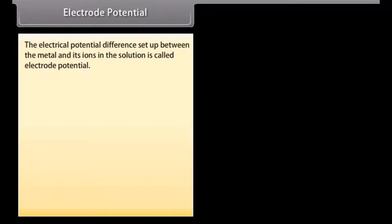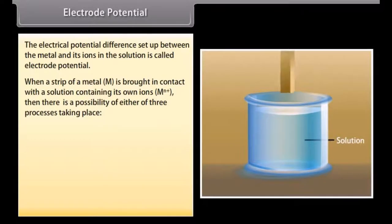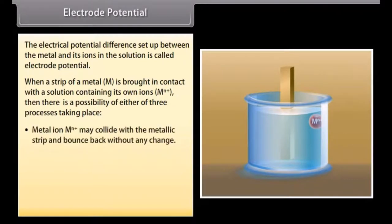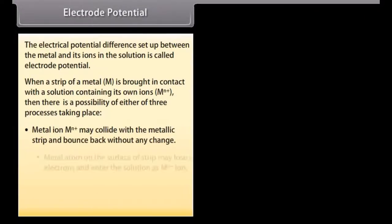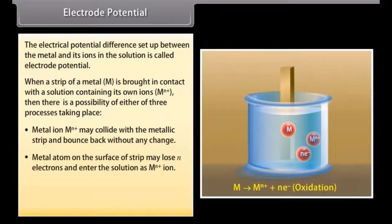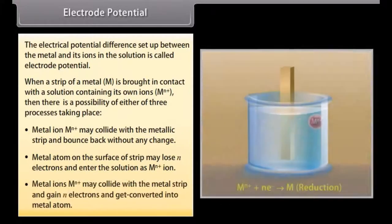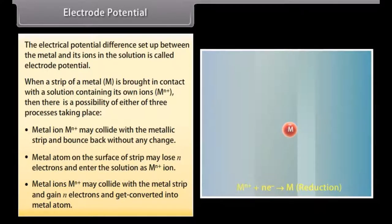Electrode potential. The electrical potential difference set up between the metal and its ions in the solution is called electrode potential. When a strip of metal is brought in contact with a solution containing its own ions, there is a possibility of either of three processes taking place: metal ions may collide with the metallic strip and bounce back without any change; metal atoms on the surface of the strip may lose N electrons and enter the solution as ions; or metal ions may collide with the metal strip and gain N electrons and get converted into metal atoms.